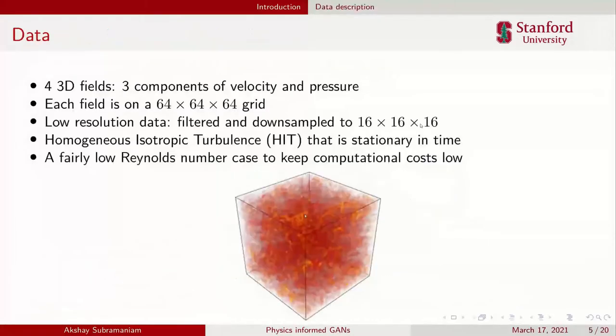The problem we're looking at is the simplest turbulence flow field you can imagine: homogeneous isotropic turbulence. It's a 3D periodic box with some forcing inside to generate turbulent structures. We're using a 64 by 64 by 64 grid with four fields: three velocity fields and a pressure field. The low resolution data is generated by filtering those high resolution fields and down sampling them by 4X to get a 16 by 16 by 16 grid. I have to say all this work is at fairly low Reynolds numbers just to keep computational costs manageable.